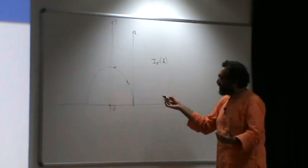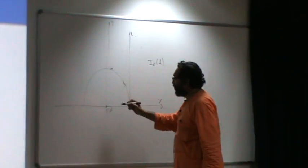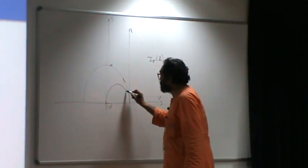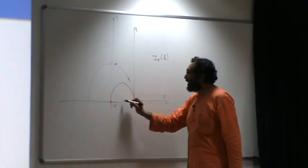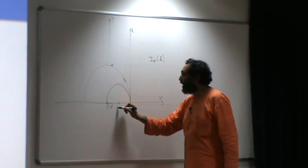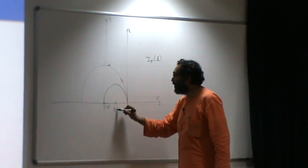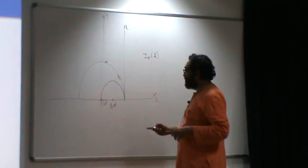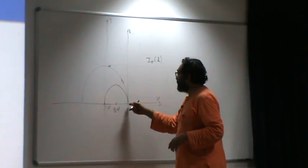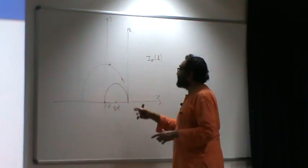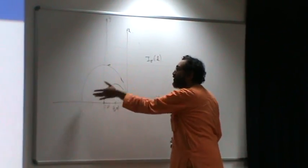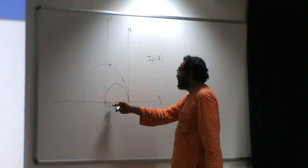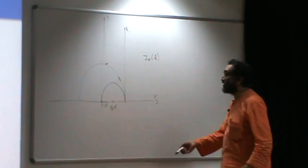The answer — and this was known to people working in spherical geometry — is that the image is actually the semicircle centered at (1/2, 0) with radius equal to half of the original. The center is shifted in this direction.